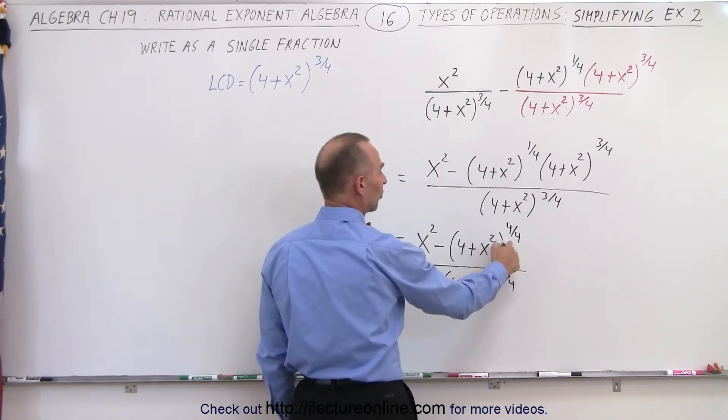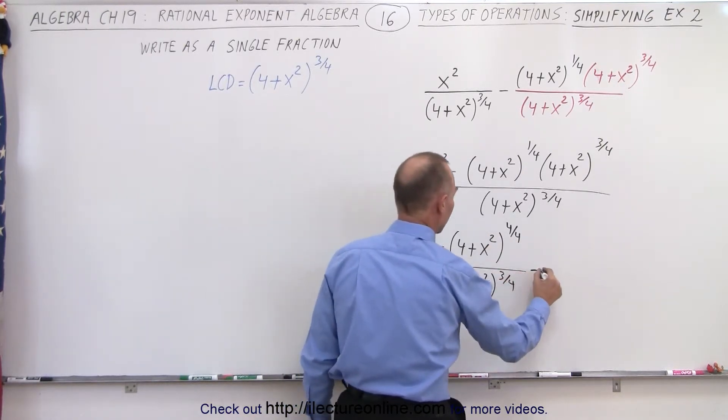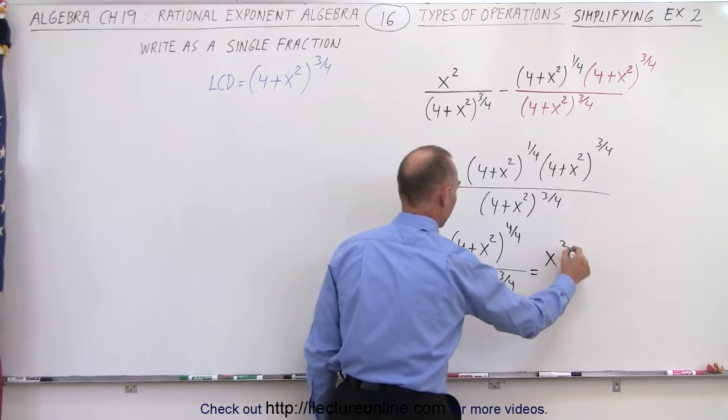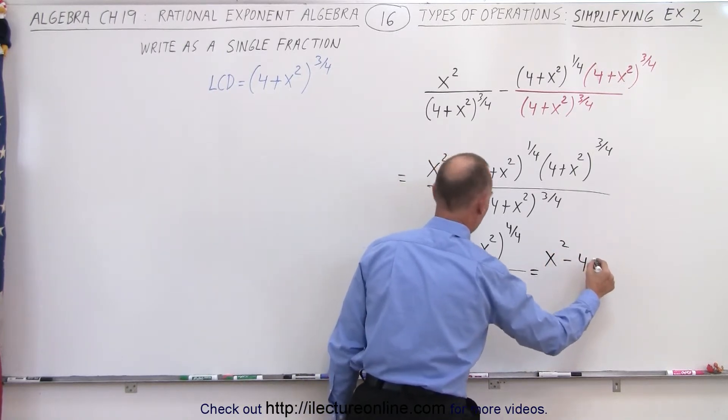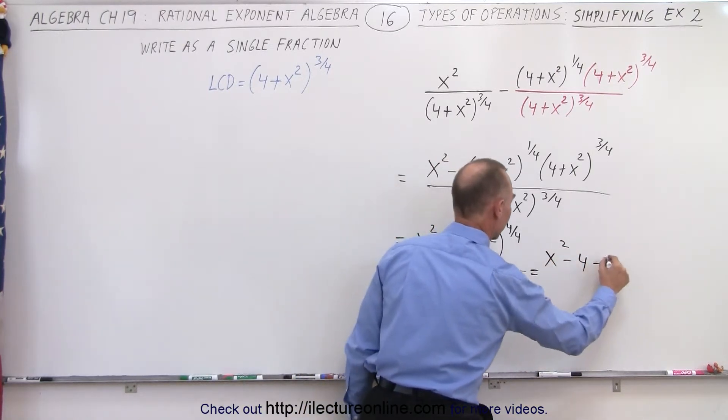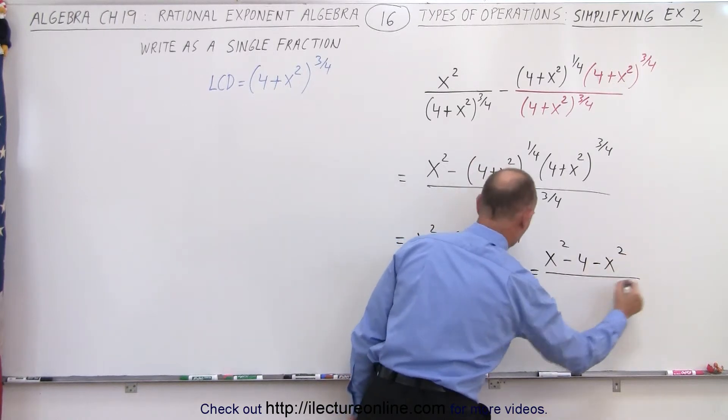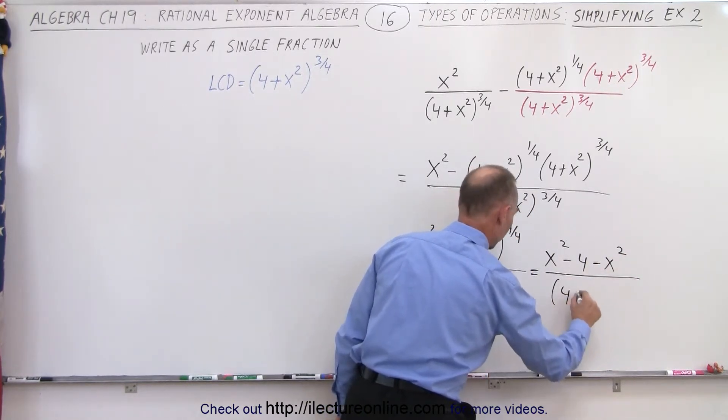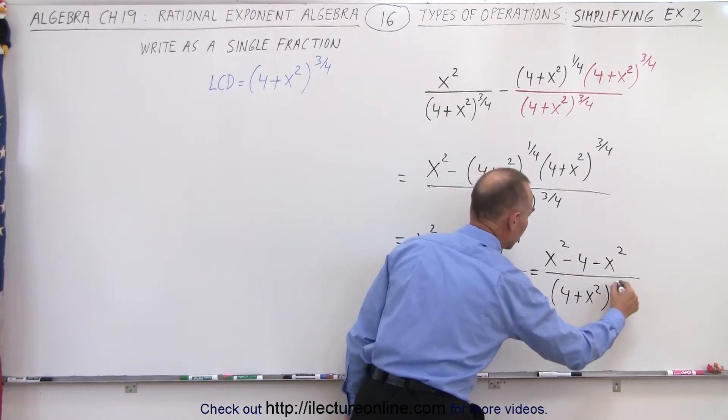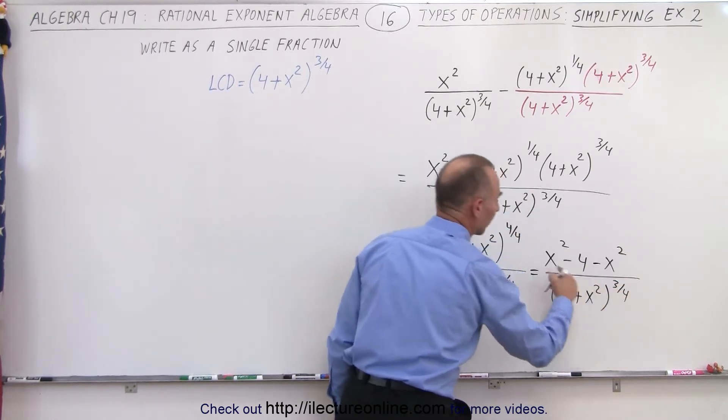Of course this is the same as to the 1 power, so this can now be written as x² minus 4 minus x², all divided by (4+x²) to the 3/4 power.